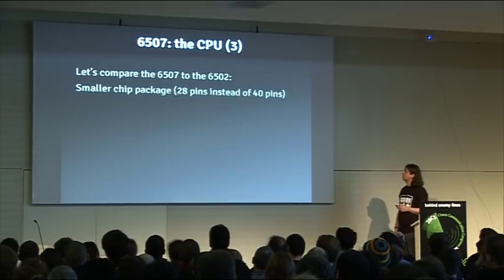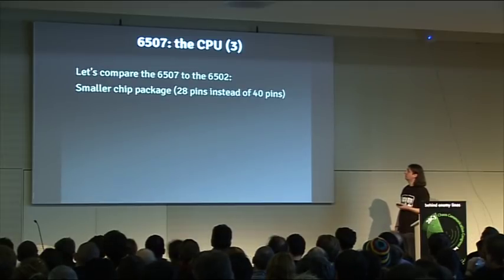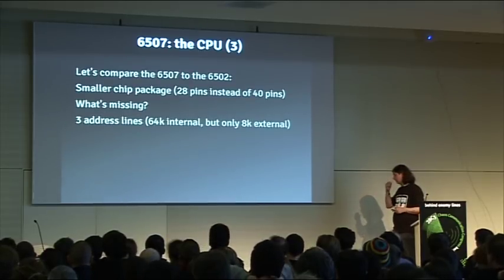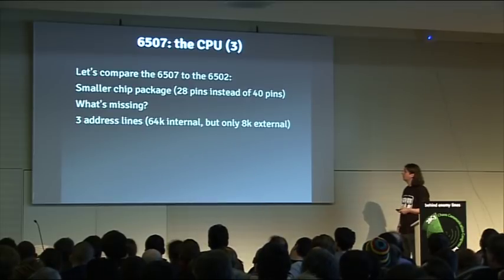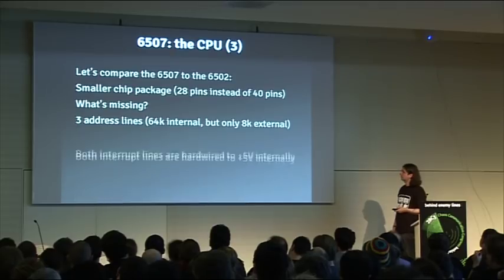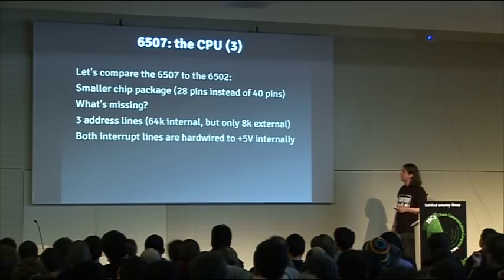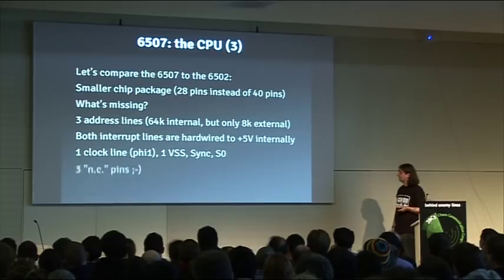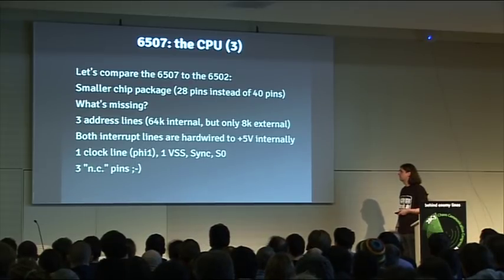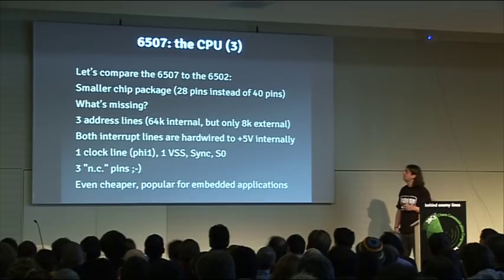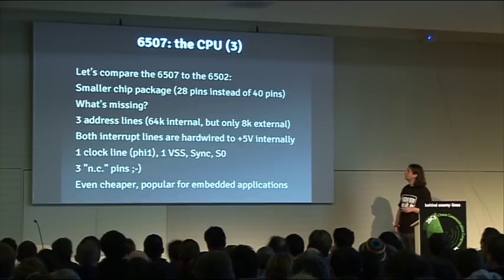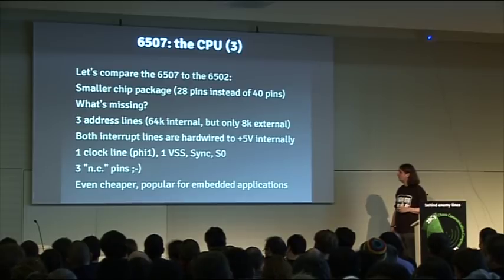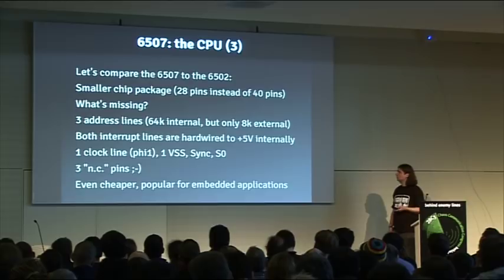What's different about the 6507? It has a smaller chip package. What's missing? Three address lines — so instead of 64K you can only address 8K; all the rest are mirrors. Both interrupt lines are completely disabled. There are four other non-essential pins missing, and three non-connected pins have also been removed. This smaller chip package was one of the main cost factors, so it was even cheaper to produce than the 6502 and was very popular for embedded applications like washing machines.